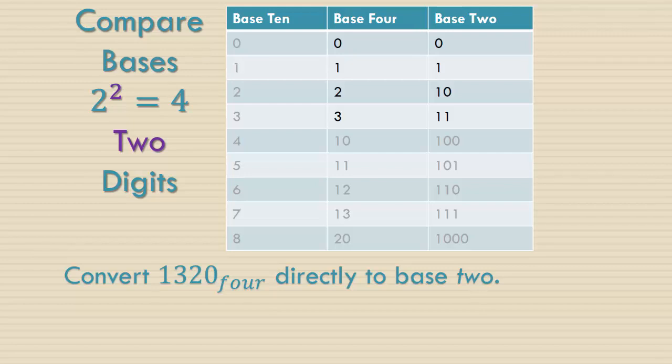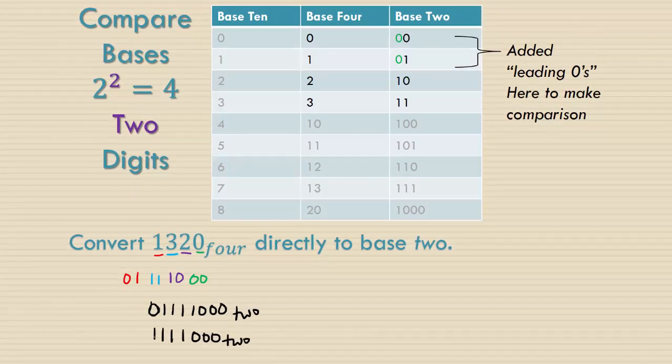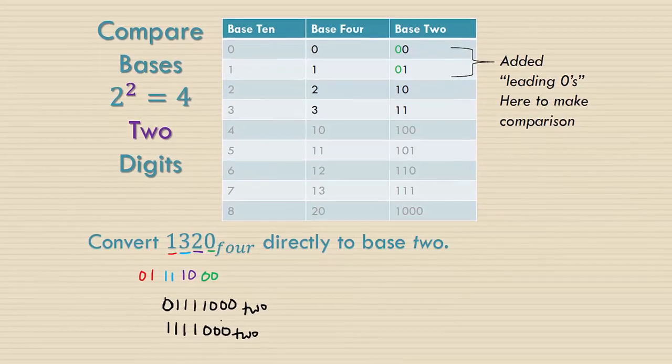Before we can do the conversion we need to add leading zeros to our base 2 numbers because all of our numbers in base 2 have to have two digits. Then we're going to look at the leading digit in our base 4 number which is 1 and we see that that corresponds to 01 in base 2. Then we're going to look at the next digit 3 that corresponds to 11 in base 2. Then we're going to look at the next digit 2 which corresponds to 10 in base 2. And our last digit 0 which corresponds to 00 in base 2. So 1320 base 4 is the same as 01111000 in base 2. Now leading zeros are not necessary so this would be the same as 1111000 in base 2.